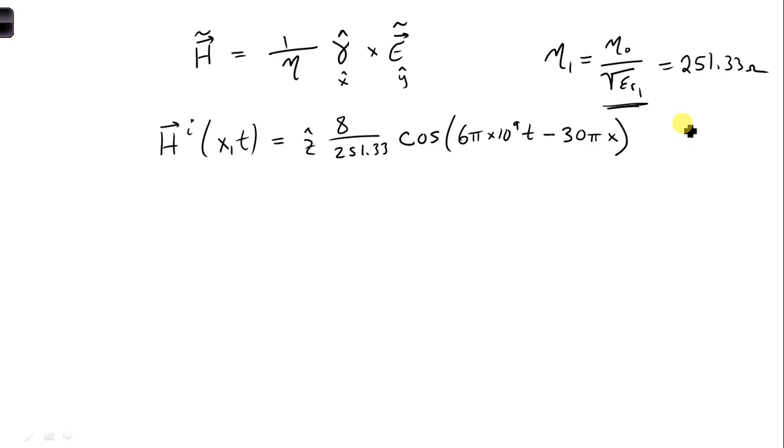All right, and that would be amps per meter for the units. So we should probably simplify this in our final expression. That would be 31.83, and we would then have to put it in terms of milliamps per meter.